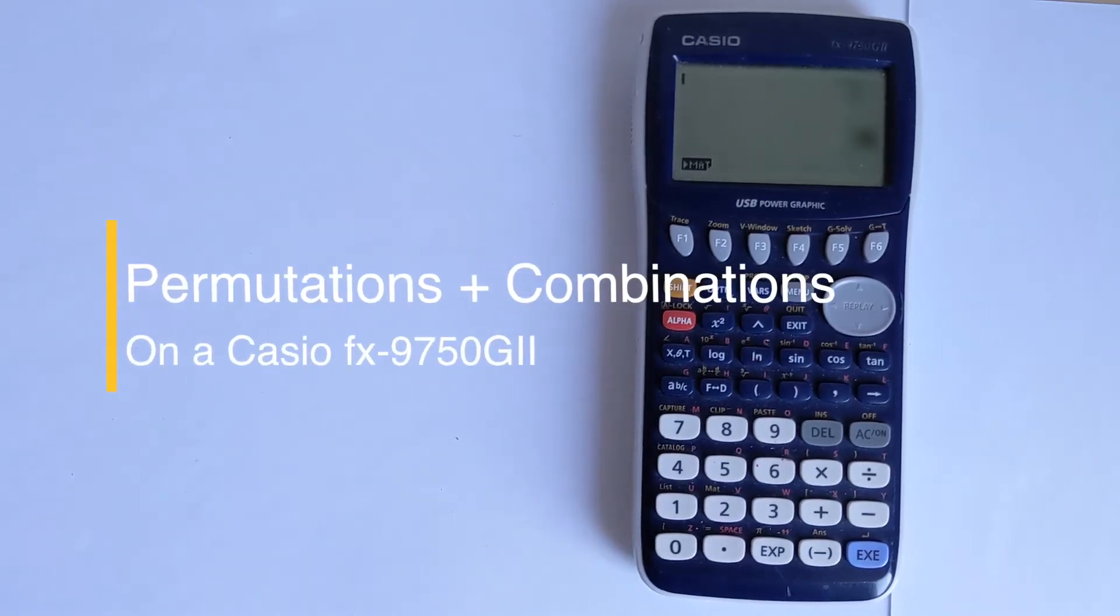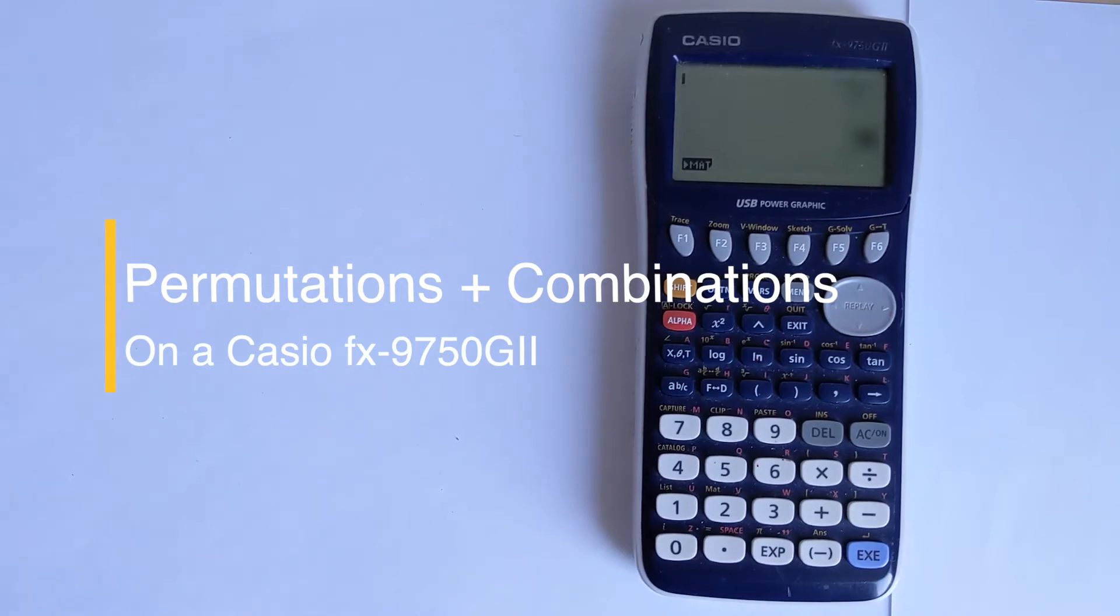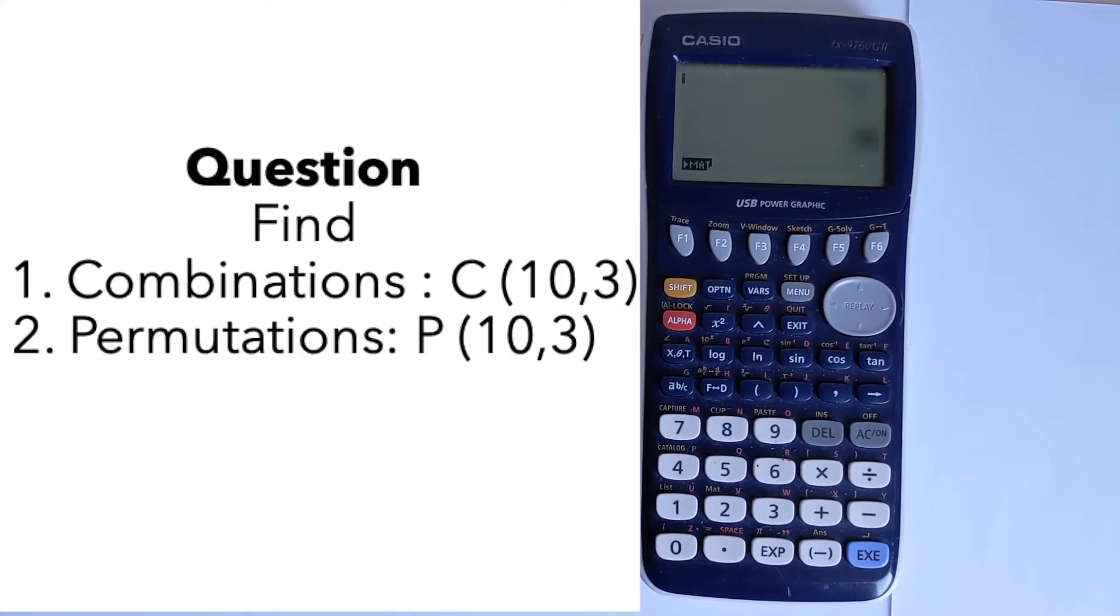In this video I'm going to show you how you can do combinations and permutations using a Casio FX-9750G2 graphing calculator. We're going to look at two examples.